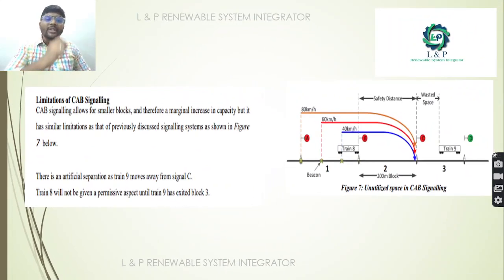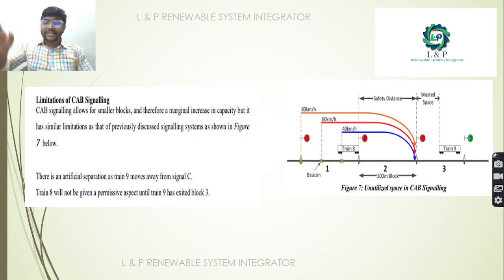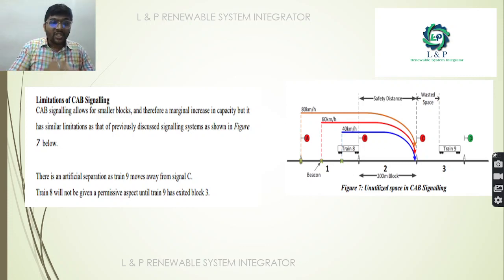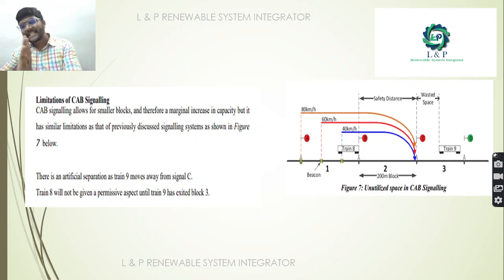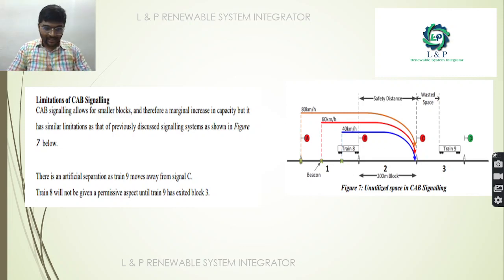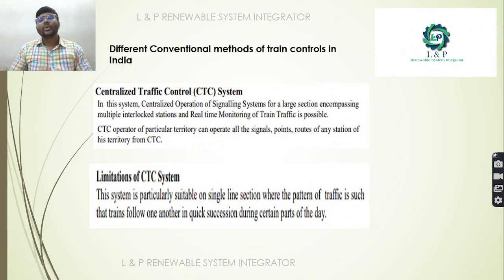The limitation of CAB signaling is that although it allows for smaller blocks and a marginal increase in capacity, it has similar limitations when compared to the previous fixed block signaling system, with some additional distance still being wasted while covering the safety distance.